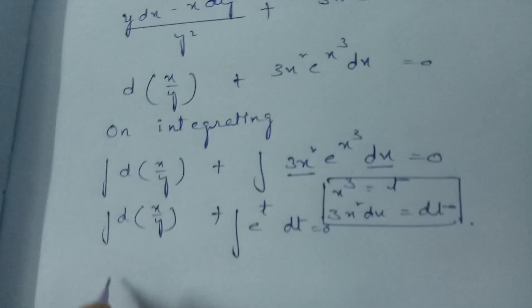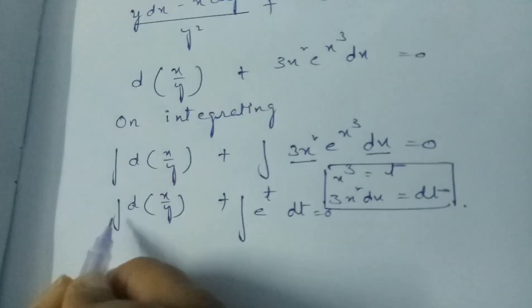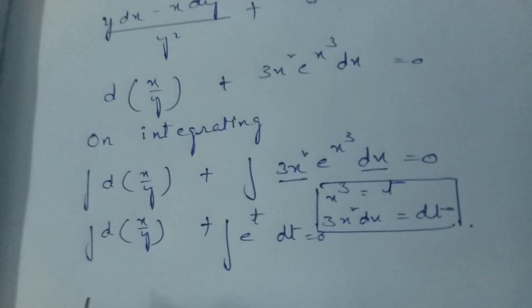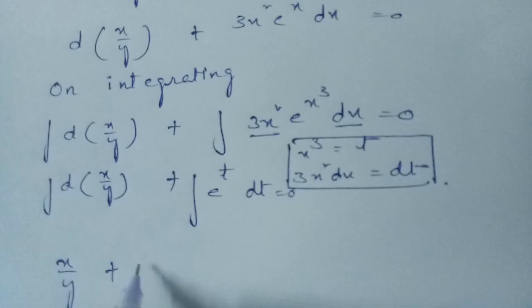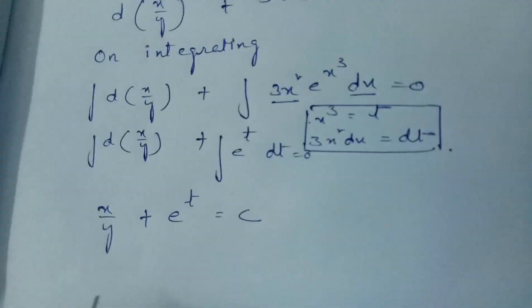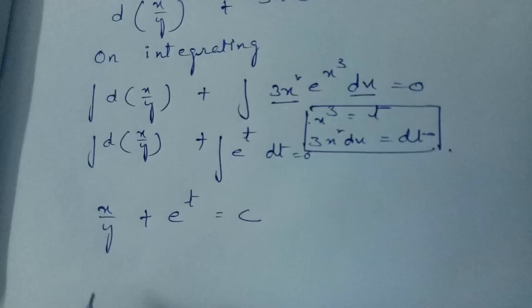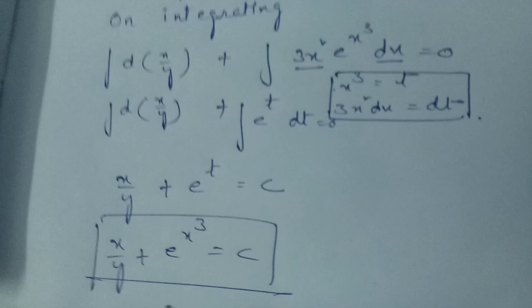Since differentiation and integration are reverse functions, integrating d(x/y) gives x/y. And the integral of e^t is e^t, which substituting back gives e^(x³). Therefore, x/y + e^(x³) = c is the solution for the given problem.